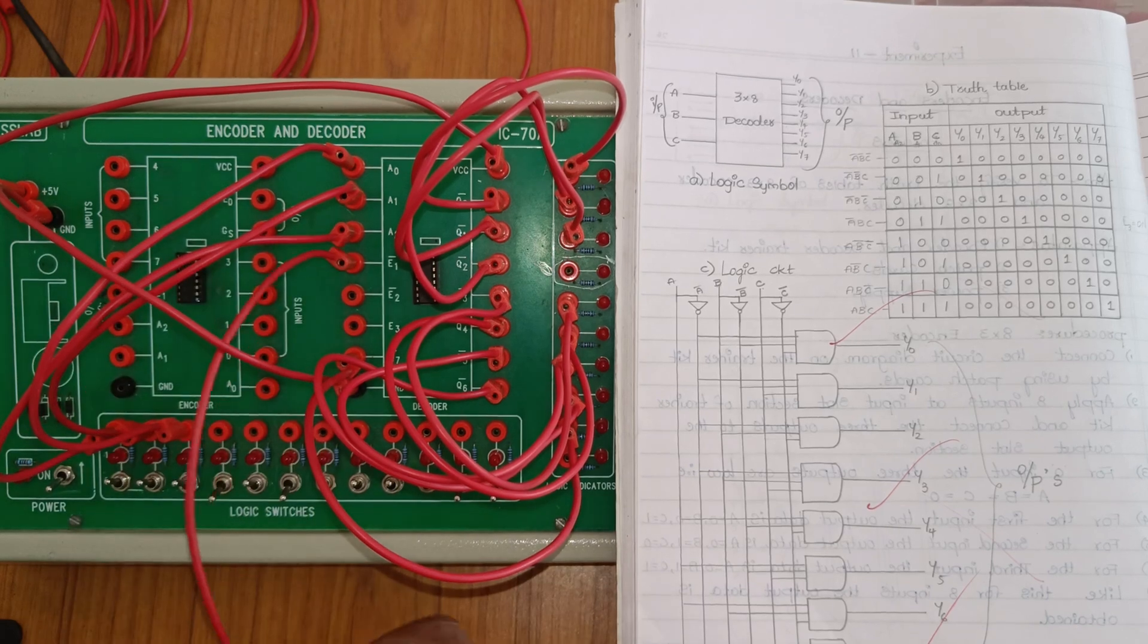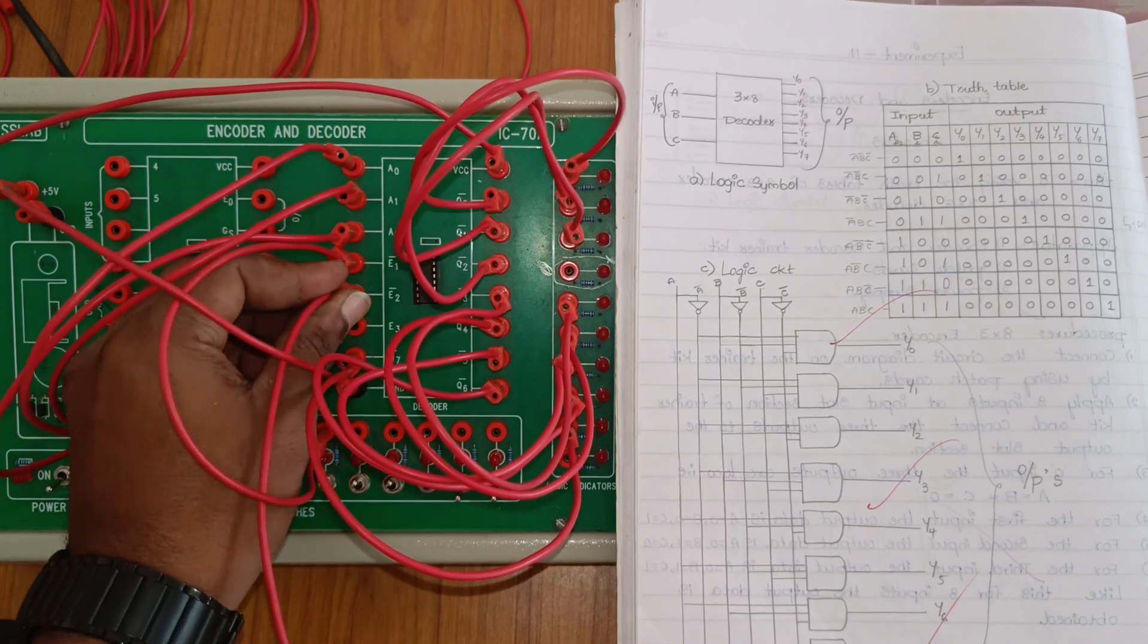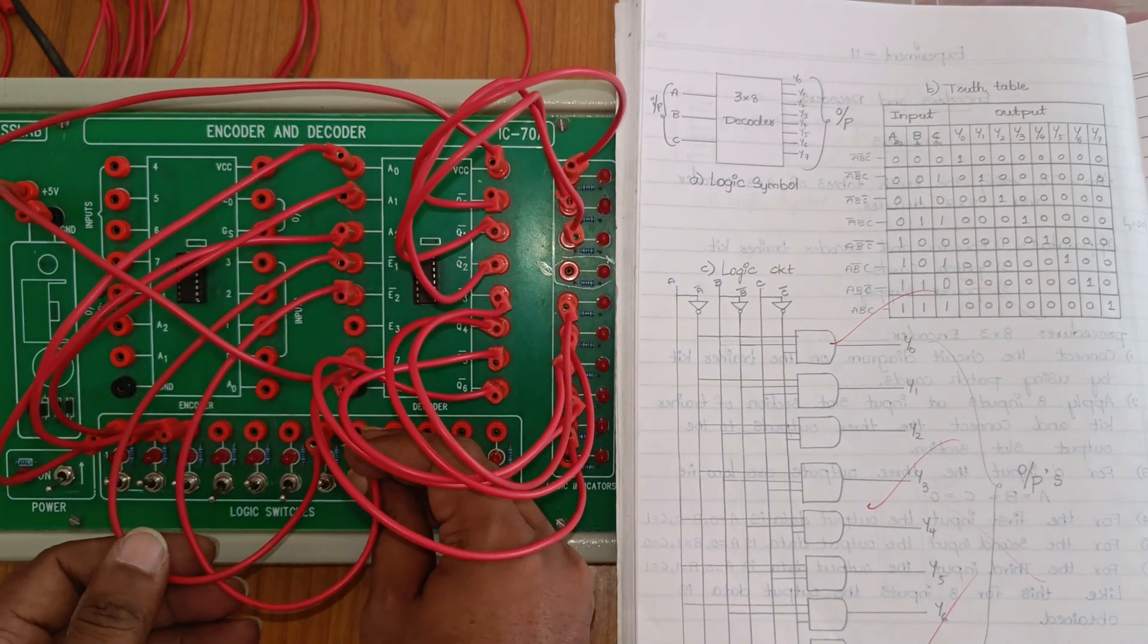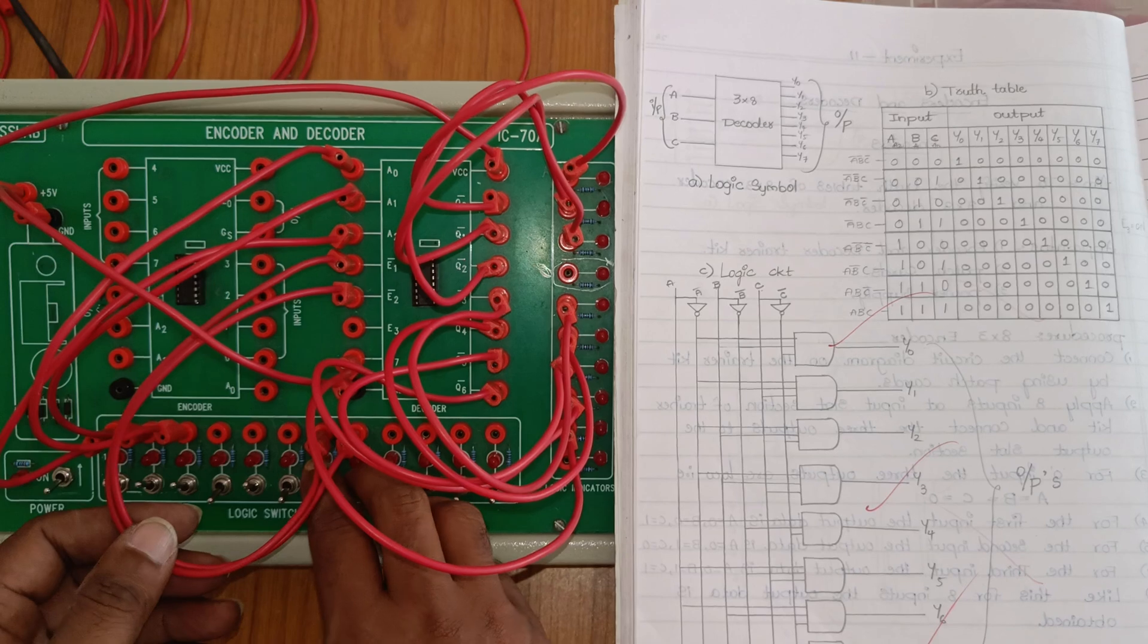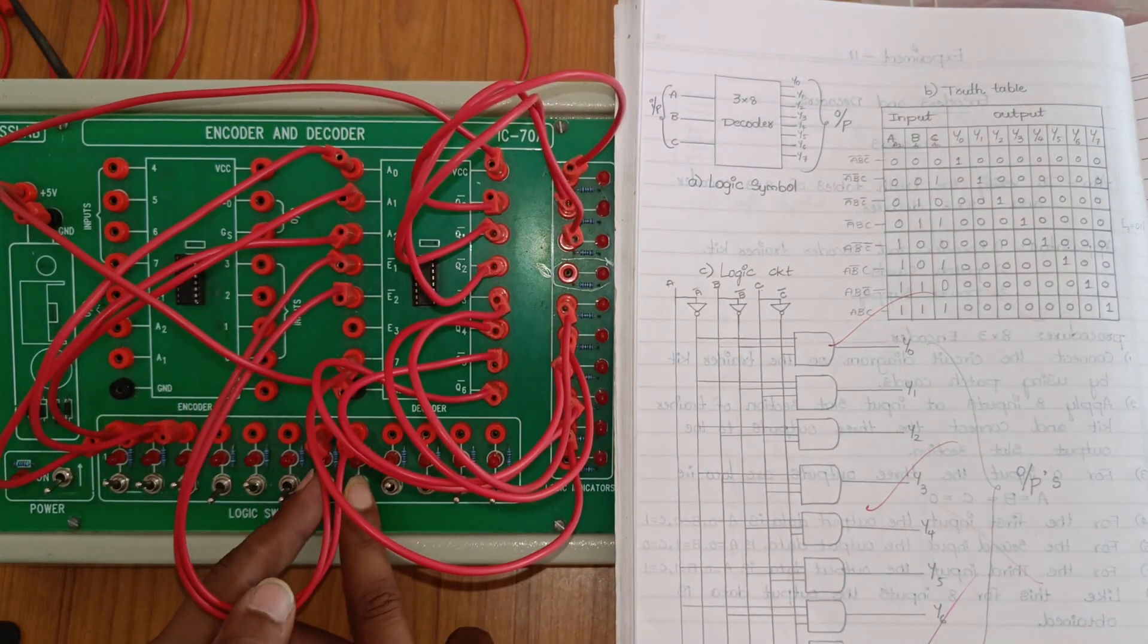E2 bar is an enable switch, E1 bar is another enable switch. E2 bar and E1 bar - when we apply zero, output data becomes one on the enable switch, like low-low.